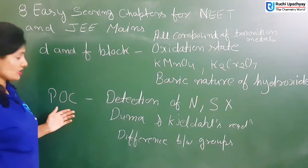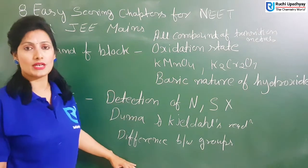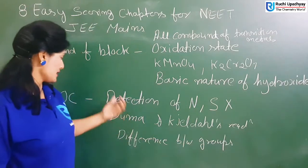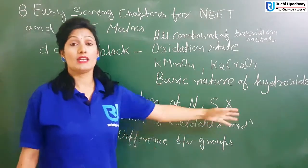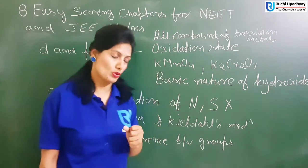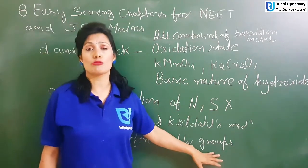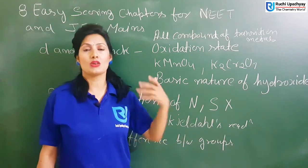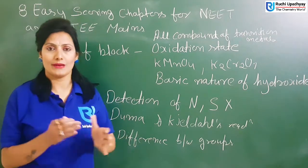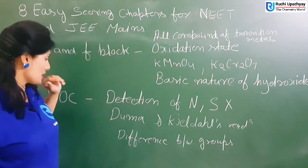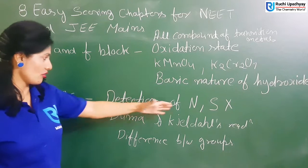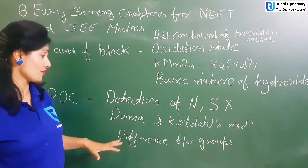Practical Organic Chemistry (POC) is important for JEE students — NEET people don't need to worry about it. JEE students should learn it because questions are asked on detection of nitrogen, sulfur, and halogens — chlorine, bromine, iodine. Dumas and Casaldas reactions will be asked. Differences between functional groups — like acetone, ketone, alcohol, aldehyde — are important. So the three topics to learn for POC are: detection of nitrogen, sulfur and halogens; Dumas and Casaldas reactions; and differences between all functional groups.